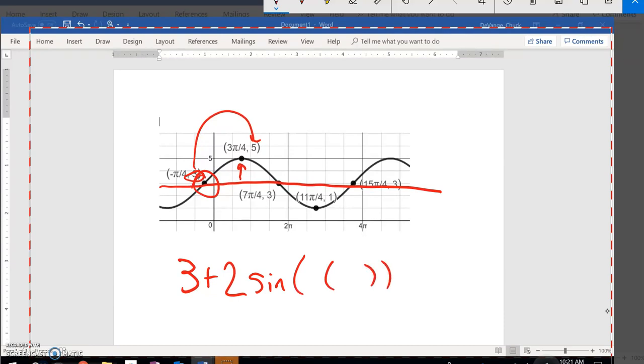Now I have two more pieces to get at: the multiplier for the period and the shift. The shift is easy. It was shifted back pi over 4, so this should be plus pi over 4.